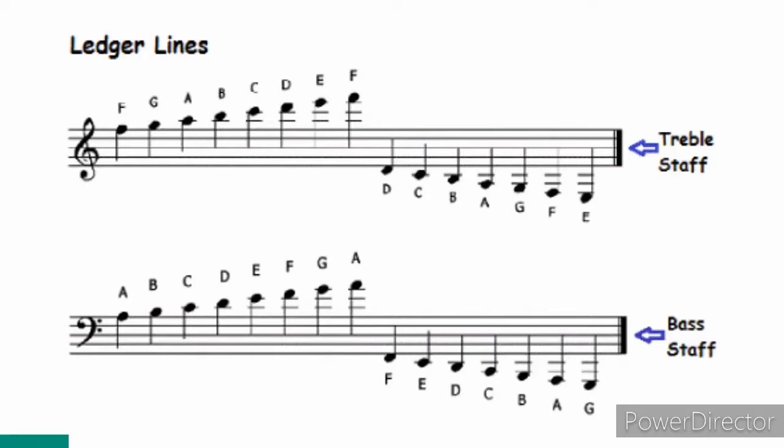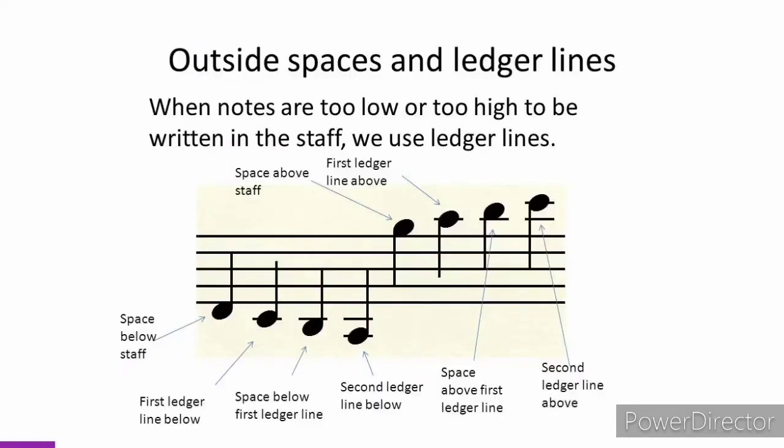Now take a look at these ledger lines. You can see the ledger lines on the treble and the bass. We have ledger lines above the treble and below, same with the bass staff. We have above and below. As we proceed we're going to get more and better understanding.